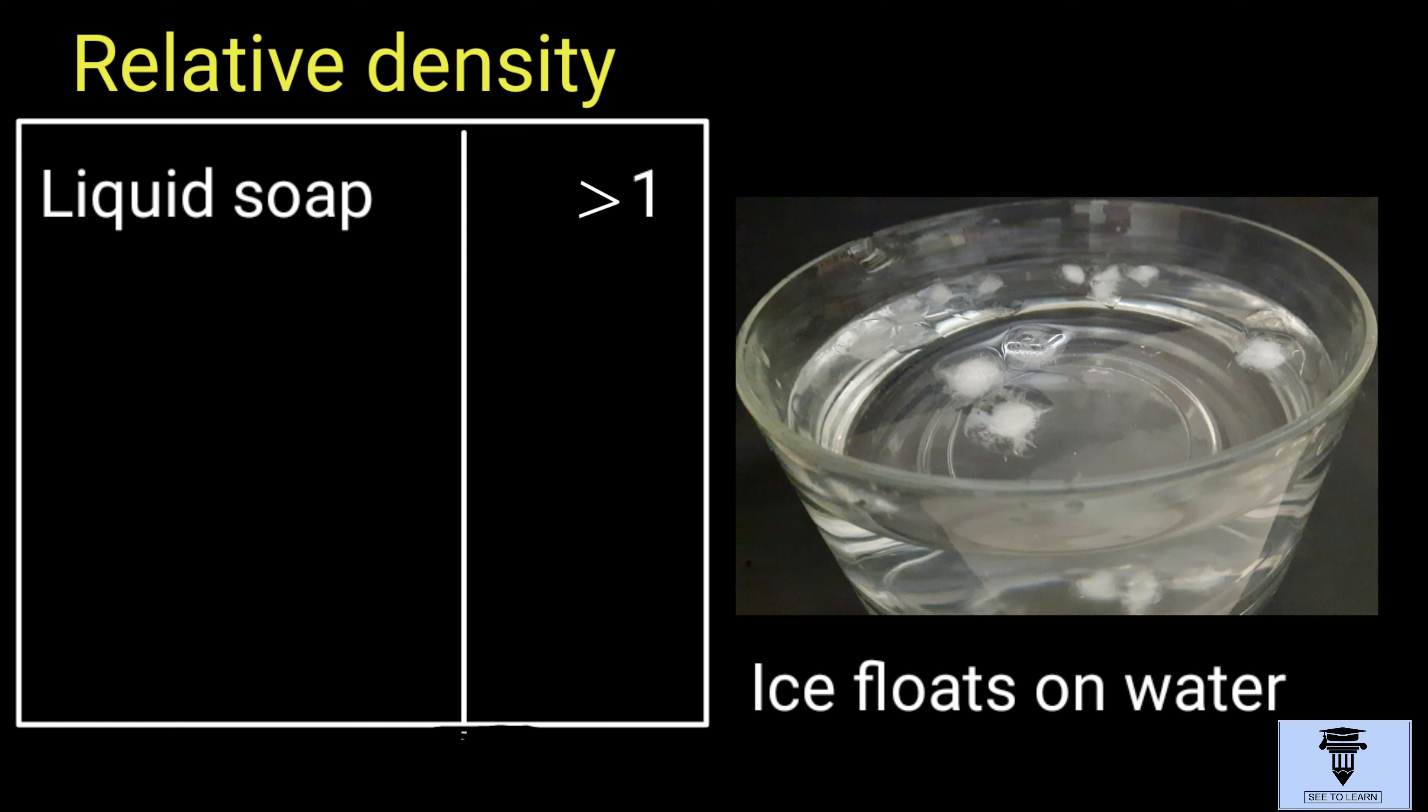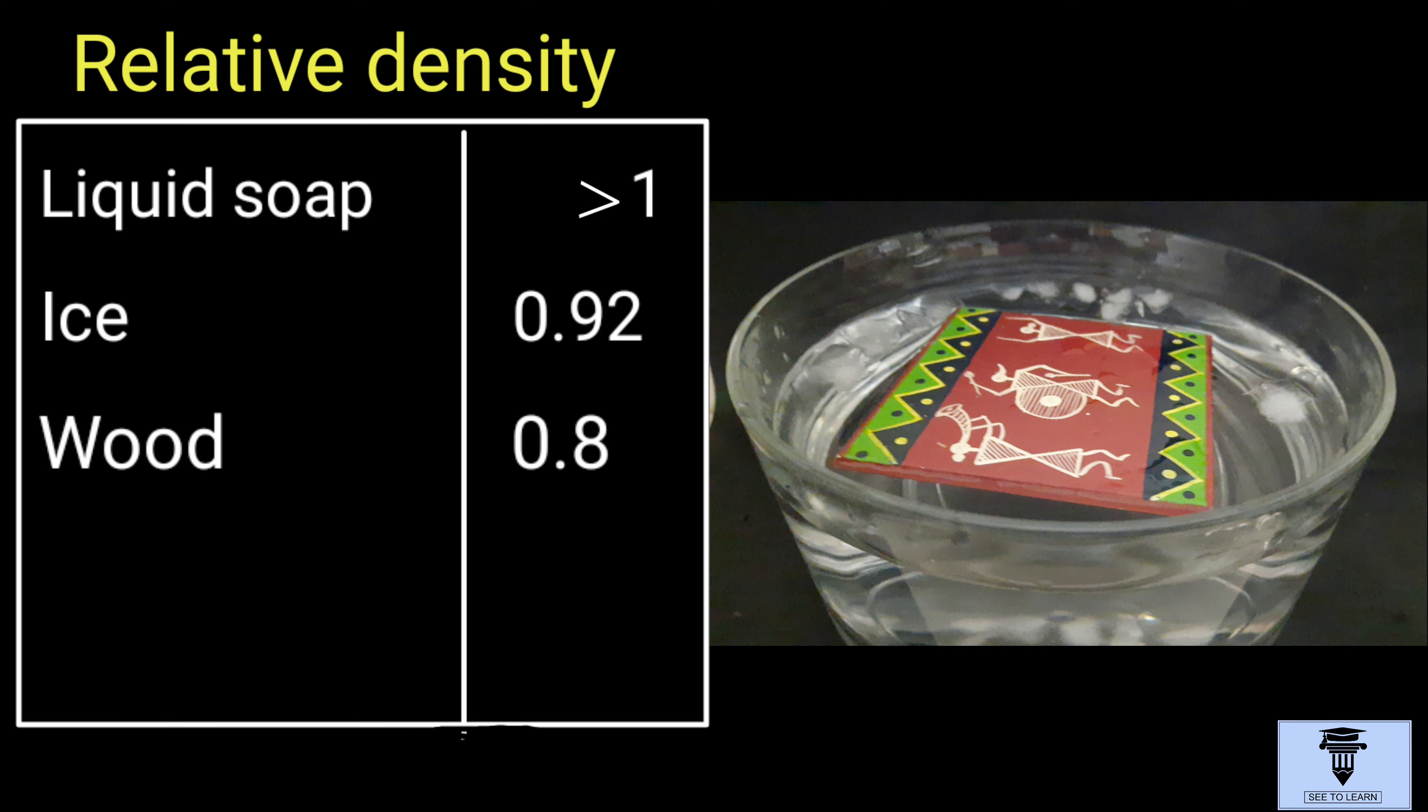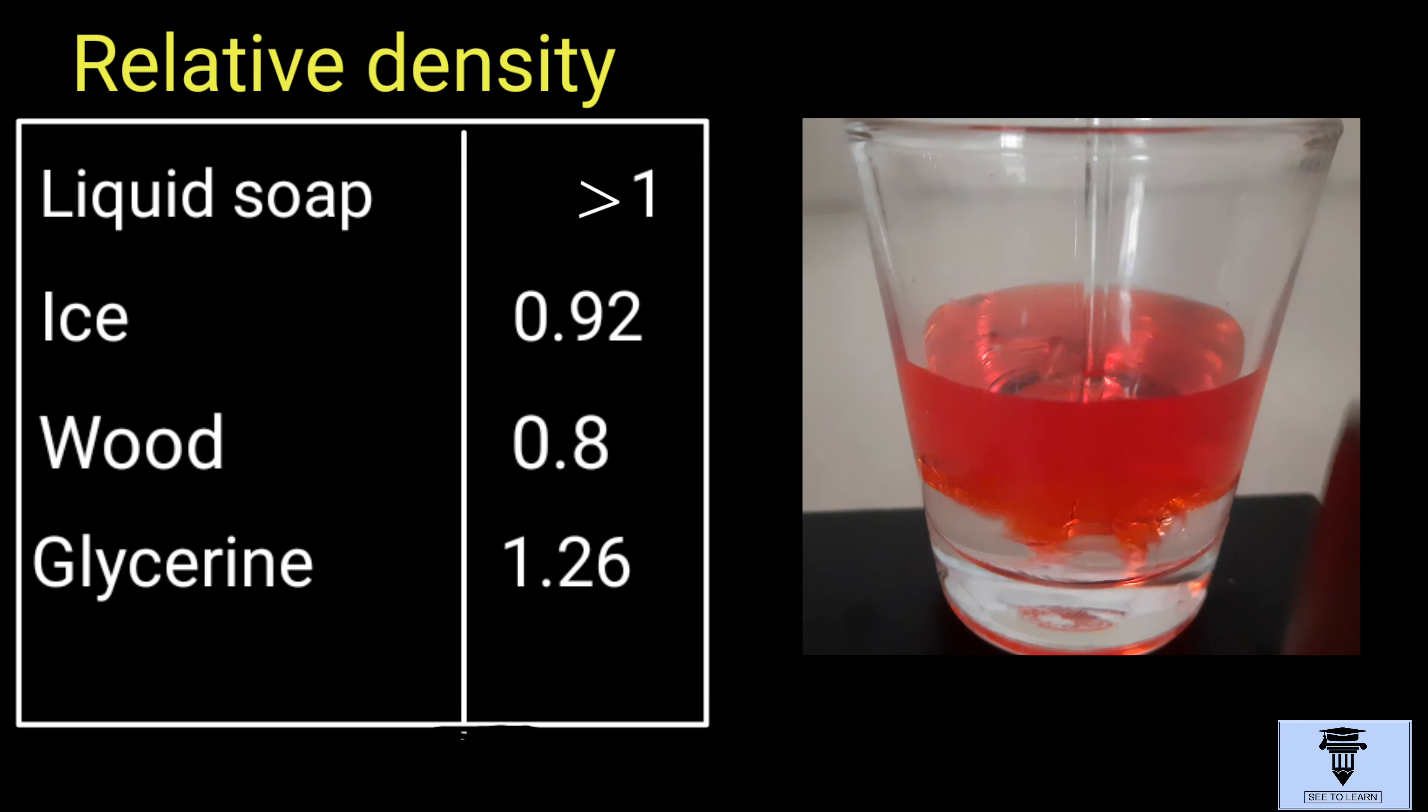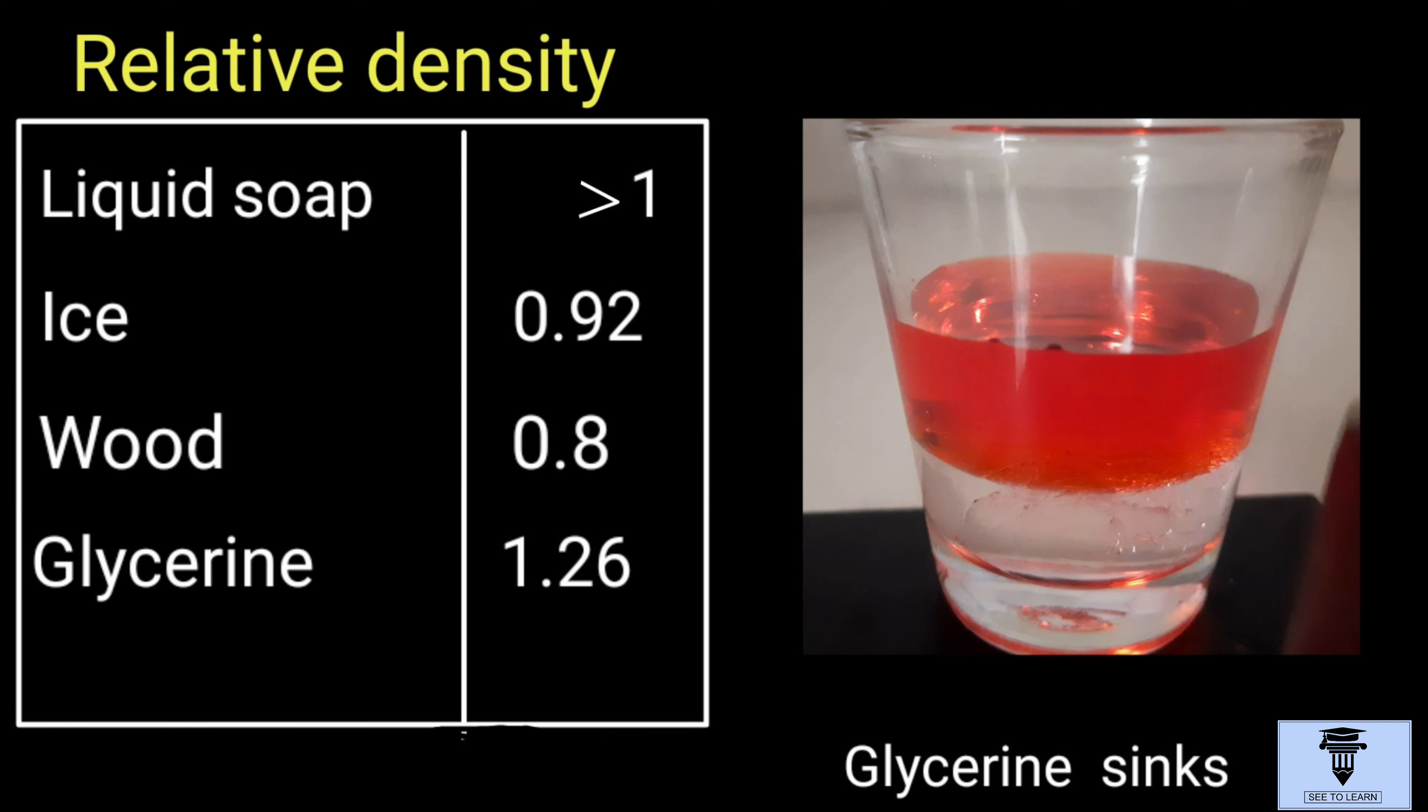Now you know that ice floats on water because its relative density at 4 degrees C is 0.92. Wood has relative density 0.8, while glycerine has 1.26. So you can see here that when I have added glycerine to colored water, it sinks.